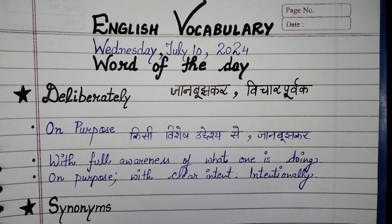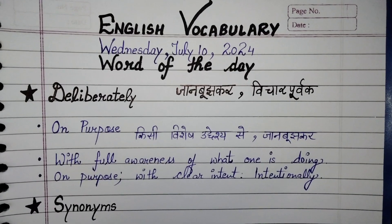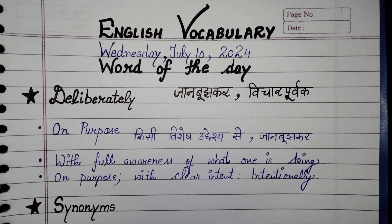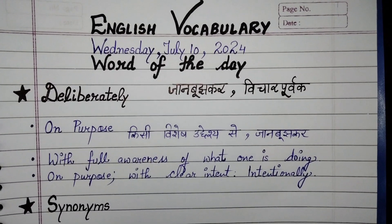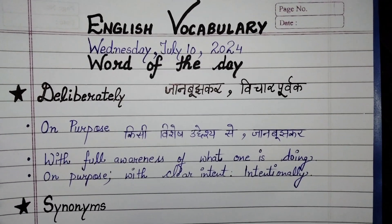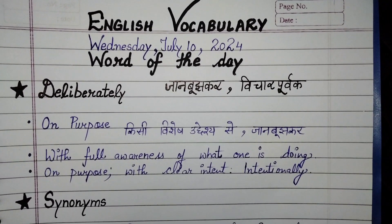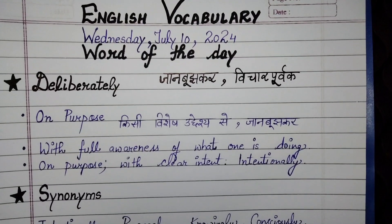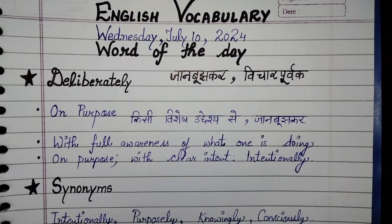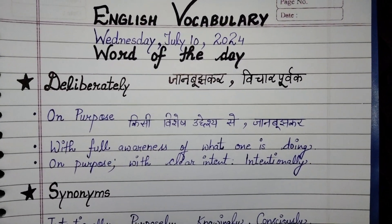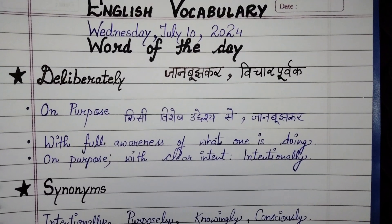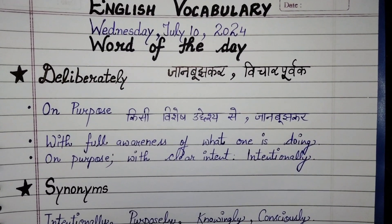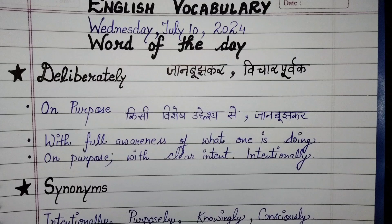The English vocabulary word of the day is 'deliberately' — spelled D-E-L-I-B-E-R-A-T-E-L-Y. Deliberately is called in Hindi: 'Jaan-Boojh-Kar', 'Vichar-Poorwak'.